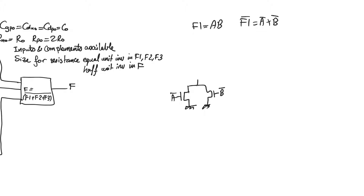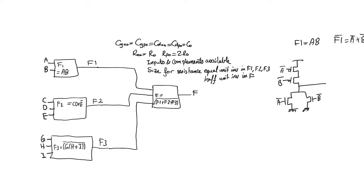In the pull-up network we have a series connection of a-bar and b-bar. Do not forget: if a and b are given to the pull-down network, then give a and b to the pull-up network; if a-bar and b-bar are given to the pull-down network, then give them to the pull-up network as well.